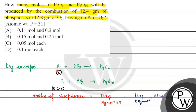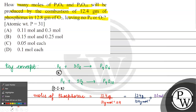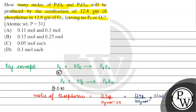In the first equation, if x moles of P4 are used, then 3x moles of oxygen are consumed. If 0.1 minus x moles of P4 are used in the second equation, then 5 times (0.1 minus x) moles of oxygen are consumed.